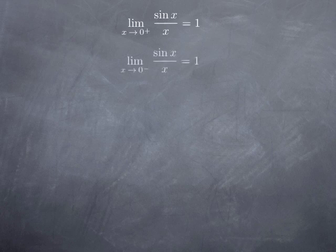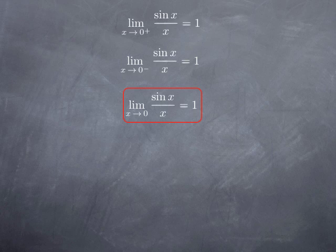With a similar argument, we could show that the limit from the left is also 1 — it would just require repeating the argument using the lower half of the unit circle. As a consequence, the limit at 0 of sin x over x exists and is equal to 1.